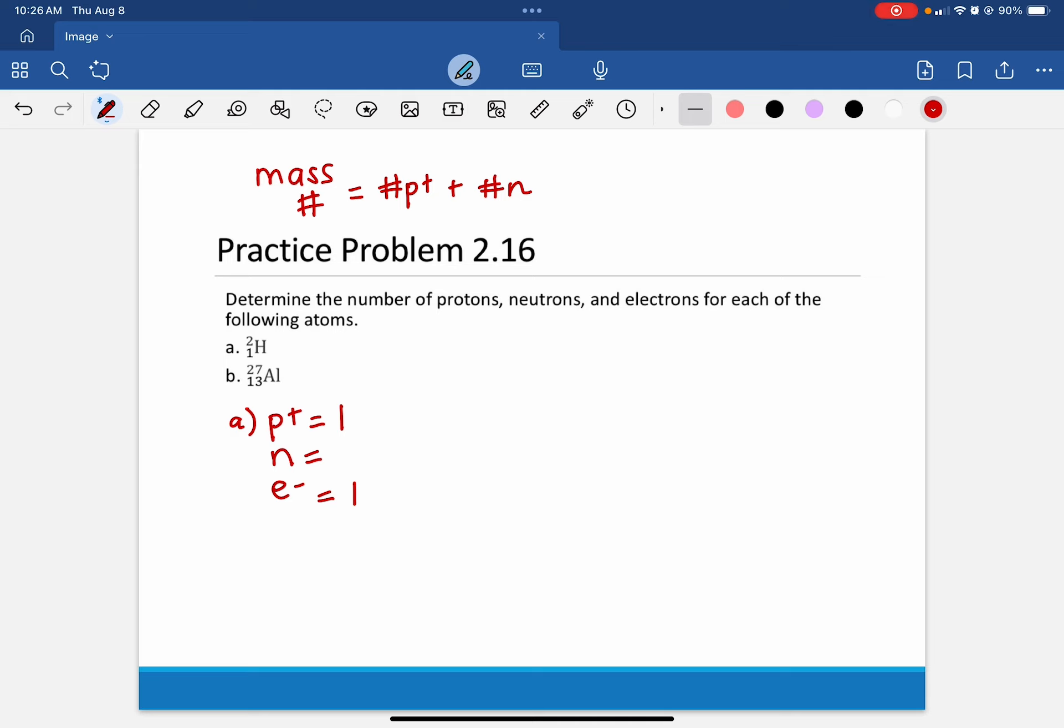We're going to use the mass number for that. We're told the mass number is at the top, 2 here. So I'm going to use the mass number formula. Mass number of 2 equals the number of protons, 1, plus x.